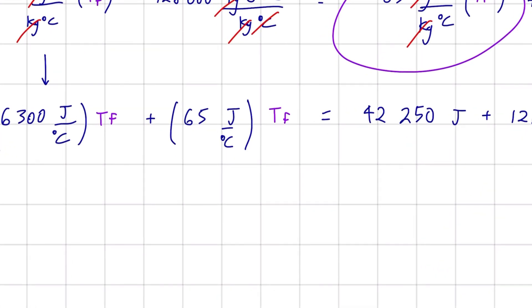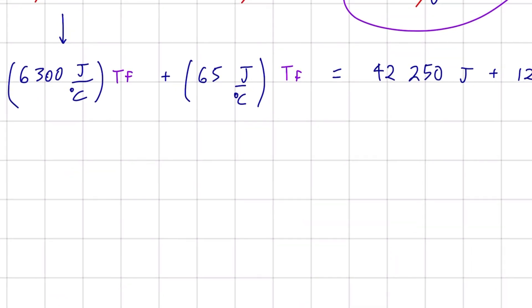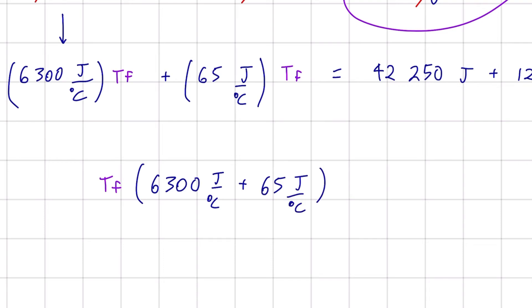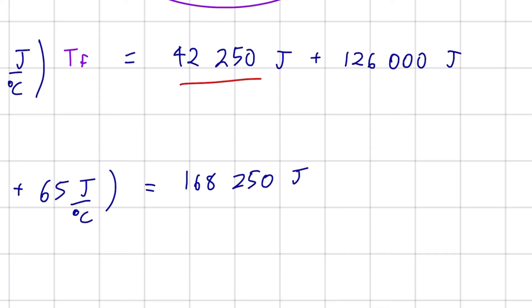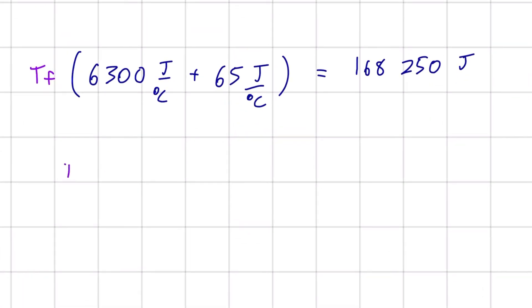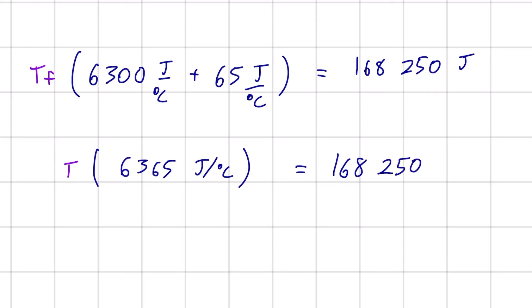We factor out Tf from both terms on the left: Tf times (6300 joules per degree Celsius plus 65 joules per degree Celsius) equals 168,250 joules. Adding those together: Tf times 6365 joules per degree Celsius equals 168,250 joules.